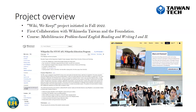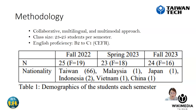As for methodology, it employs a collaborative, multilingual, and multi-modal approach. Each semester, 23 to 25 students participate with English proficiency levels ranging from B2 to C1. Table 1 displays the demographics of the students each semester.